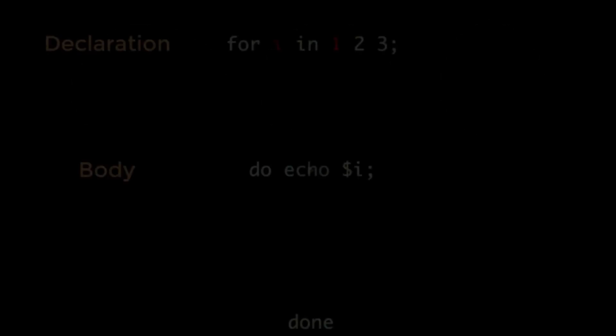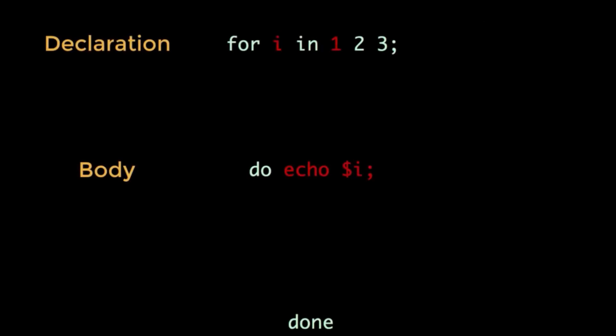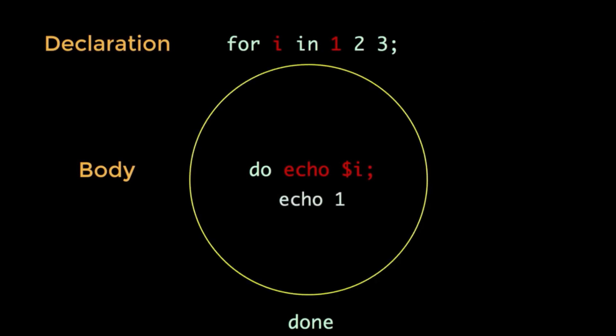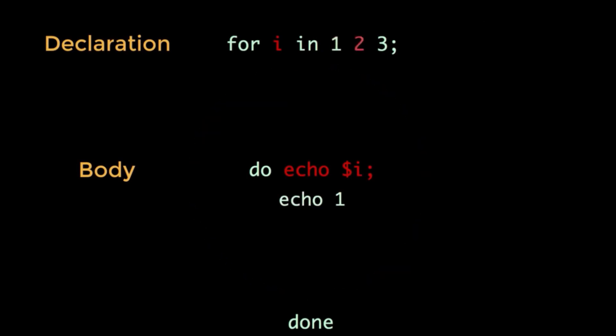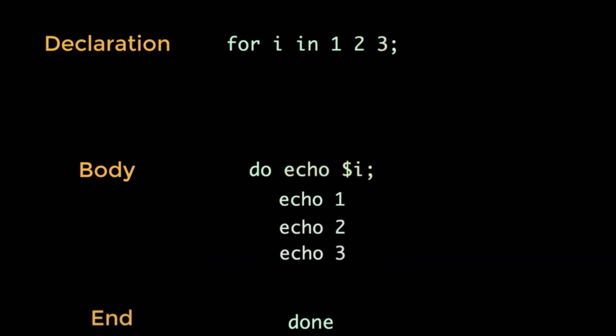The previous video on for loops showed us how to run many blocks of code with slight alterations between each execution. But what if we only want to run code if certain conditions are met? We can automate these decisions with conditional statements.